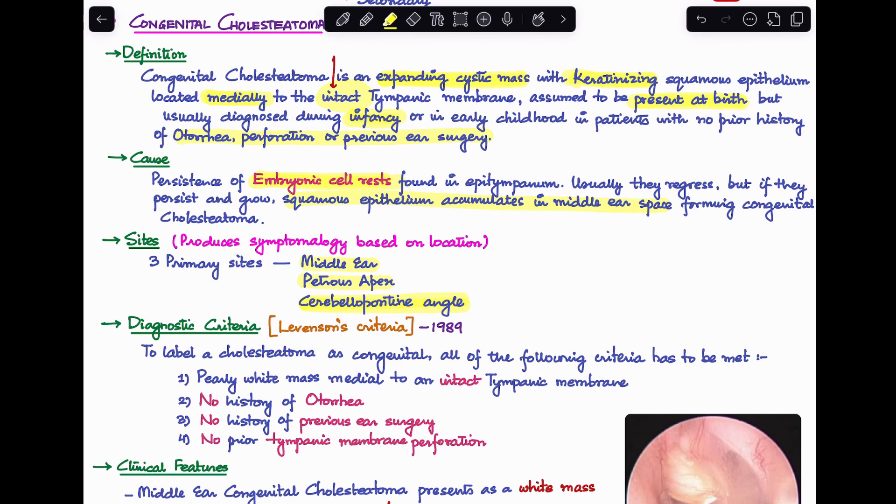Number one: you have to be able to see a pearly white mass medial to an intact tympanic membrane. Secondly, there will be no history of otorrhea. Third, there is no history of previous ear surgery. And fourth, there will be no prior tympanic membrane perforation. These four criteria together make up Levinson's criteria and all of them have to be fulfilled to diagnose a cholesteatoma as congenital.